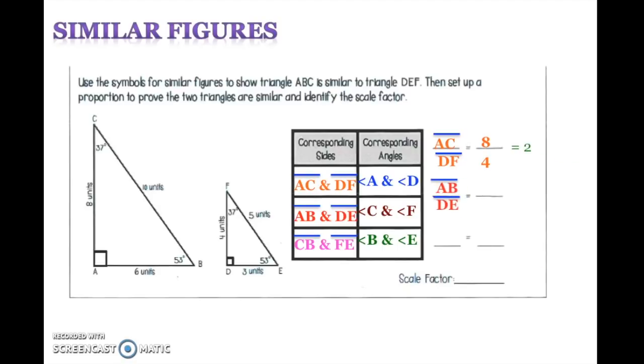Let's look at AB and DE. We have 6 and 3. Simplify, leaves us with 2. Let's look at CB and FE. 10 over 5. Simplify, that leaves us with 2, which tells us that our scale factor is 2. So we can conclude that our triangles are indeed similar.